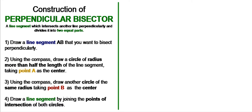Perpendicularly means making an angle of 90 degrees. The second thing is that it divides the line into two equal parts, because 'bisector' means 'bi' means two and 'sector' means a part of something. So bisector means two equal parts. You are supposed to draw a line that divides another line into two equal parts and makes an angle of 90 degrees — that is a perpendicular bisector.